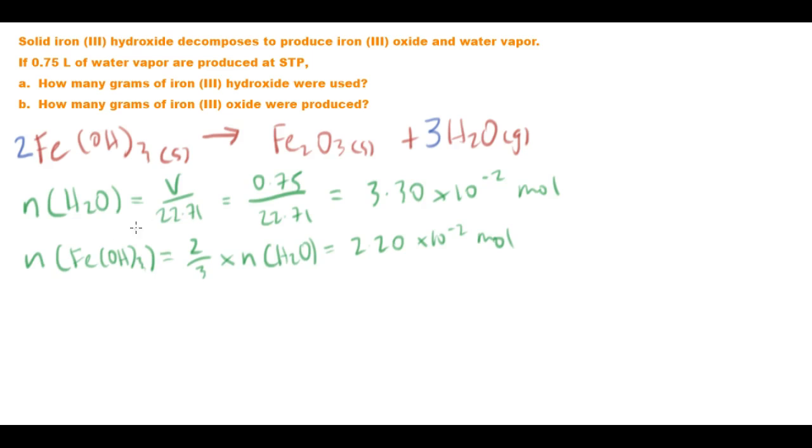And to find out the mass, that one's pretty straightforward. The mass of our iron three hydroxide is going to be that number of moles, so 2.2 times 10 to the negative 2 moles times its molar mass. So let's find out its molar mass which is 106.874.